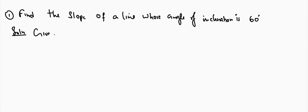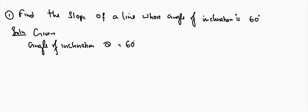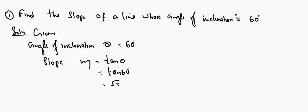Given angle of inclination, that is theta, which is equal to 60 degrees. We have to find the slope. Slope is m, which is equal to tan theta. So tan 60 degrees equals root 3. Root 3 is the slope of the line whose angle of inclination is 60 degrees.